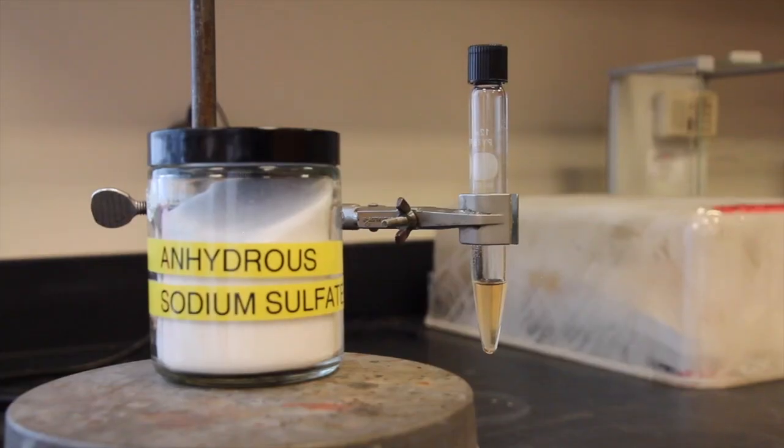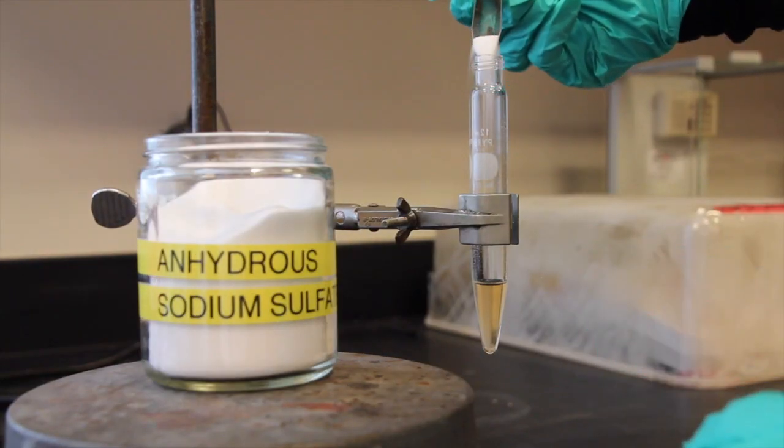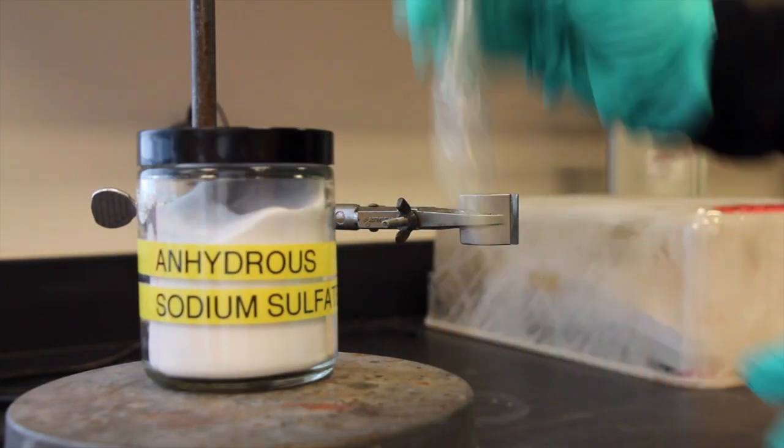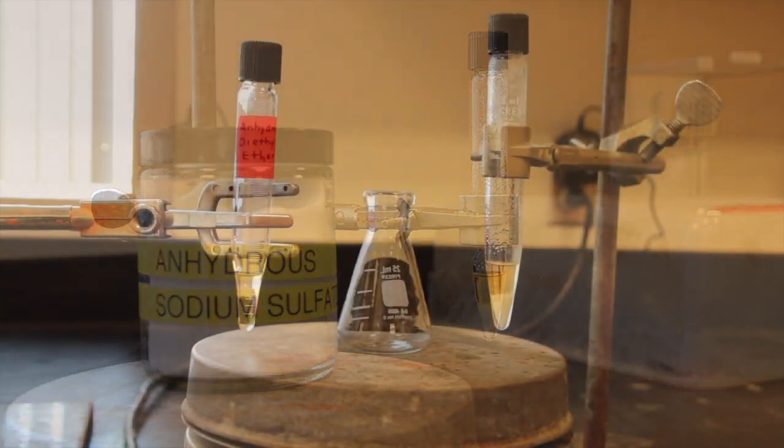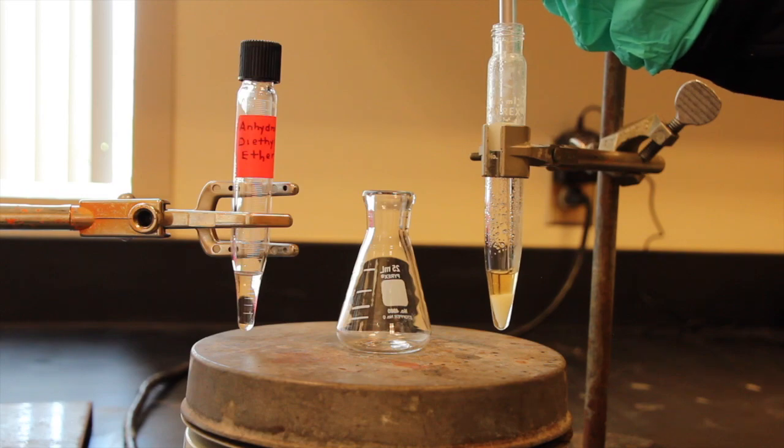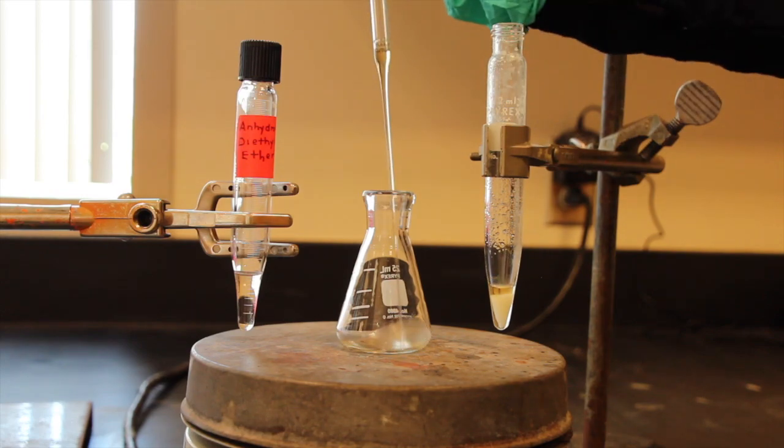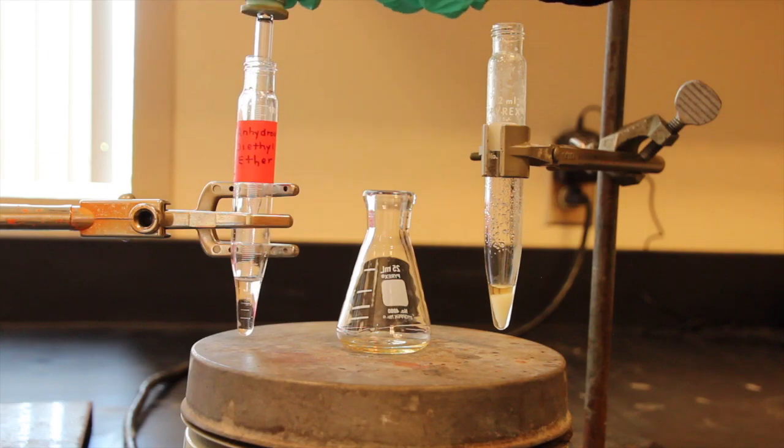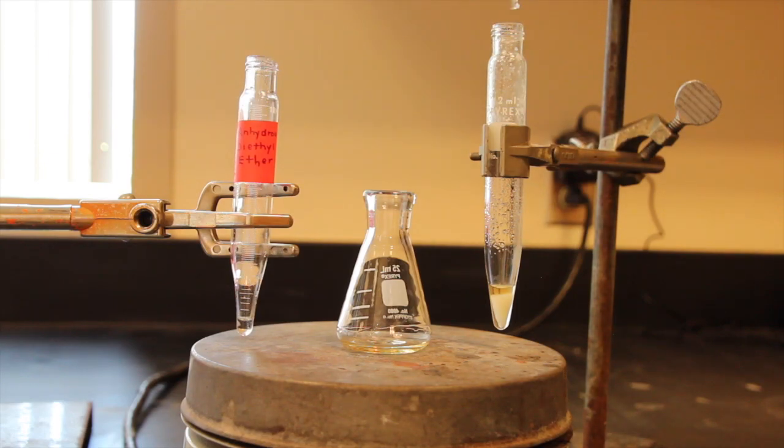Dry the ether solution with anhydrous sodium sulfate. Allow the drying reagent to work for at least five minutes. Transfer the dried ether solution into a small Erlenmeyer flask, leaving the drying agent behind in the centrifuge tube. Rinse the drying agent with more diethyl ether into the Erlenmeyer.